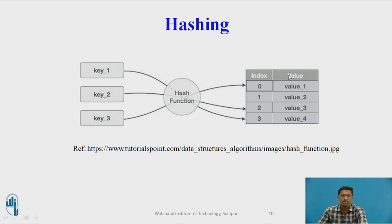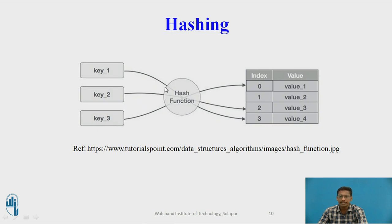This is a general diagram of hashing. Key 1, Key 2, and Key 3 are the elements to be inserted into the data structure, called the hash table. Input elements or input keys are not directly inserted into the hash table — they are first passed to a hash function. The hash function finds a value indicating where to insert the input element inside the hash table. The output of the hash function is a hash key, which tells the position where to store the input element.